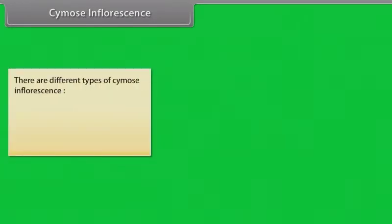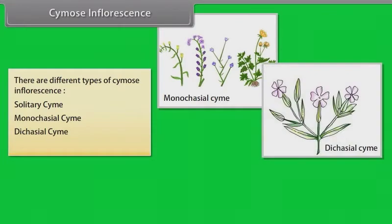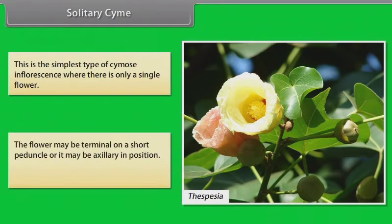There are different types of cymose inflorescence: solitary cyme, monochasial cyme, dichasial cyme, and polychasial cyme. Solitary cyme is the simplest type of cymose inflorescence where there is only one single flower. The flower may be terminal on a short peduncle or it may be axillary in position. Example: Thespesia.